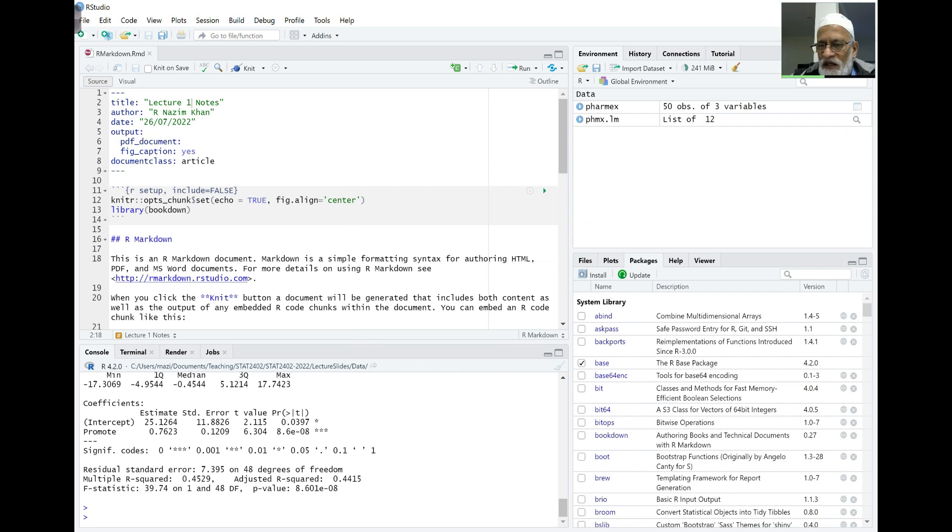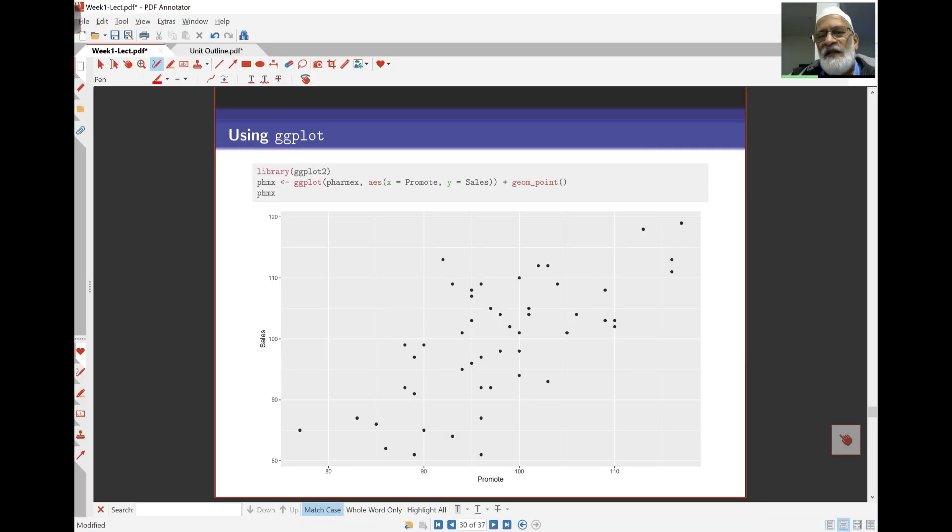That's how this works. So packages are loaded. Then pharmax, the way this works is different from other plot things. I can create an object here. I've got pharmax here, as I've got here, is ggplot, and so the data is pharmax, and aex, or aesthetics, as it says, the x is promote, the y is sales.